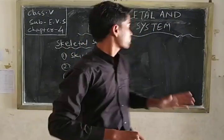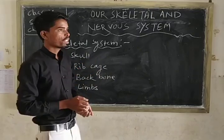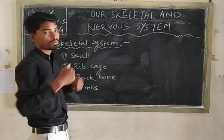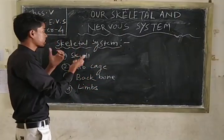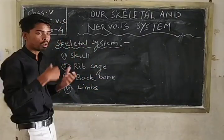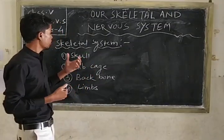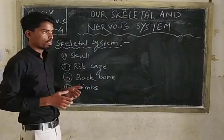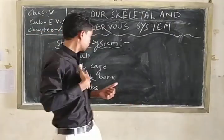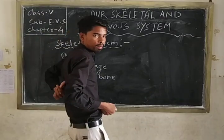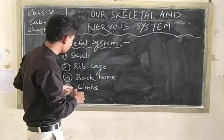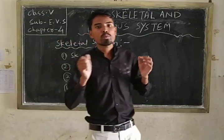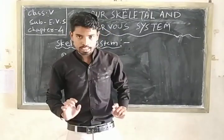Now, coming to the skeletal system. In our body there are 206 bones, and different bones are present in different parts of our body. The skeleton system includes the skull, rib cage, backbone, and limbs. There are four limbs: two arms and two legs.